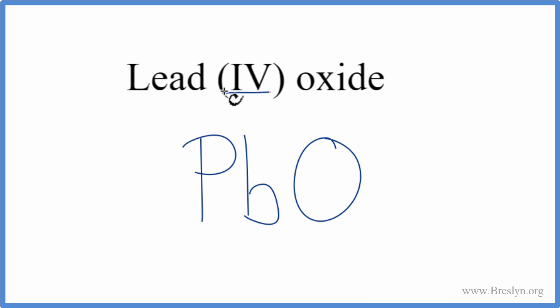Lead, we're already told, it's a transition metal, and this Roman numeral tells us it has a charge of 4+. This is the Roman numeral for 4. Oxygen on the periodic table has a 2- charge.